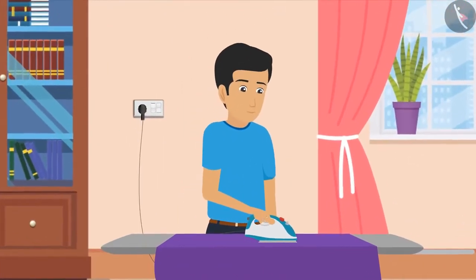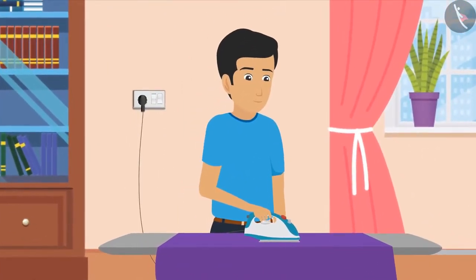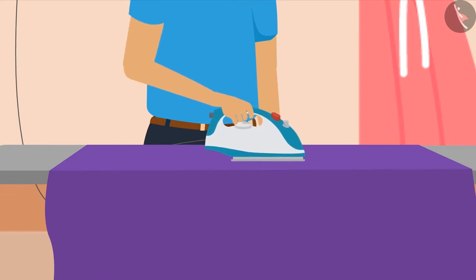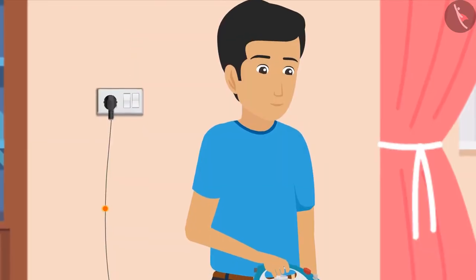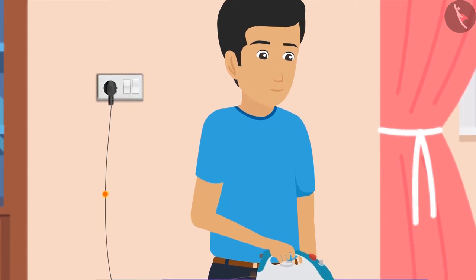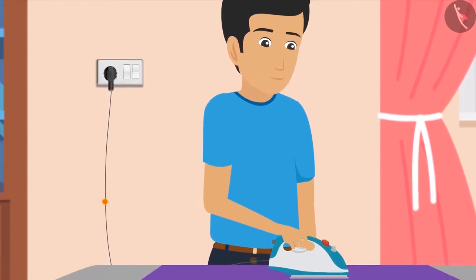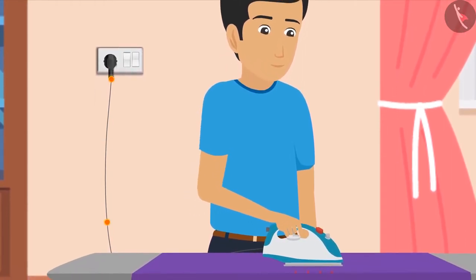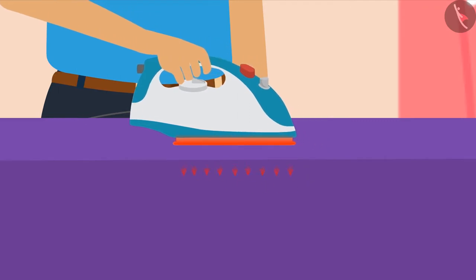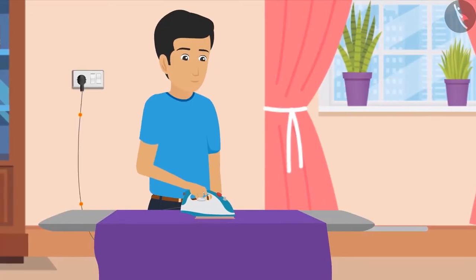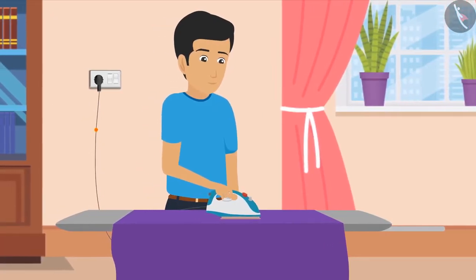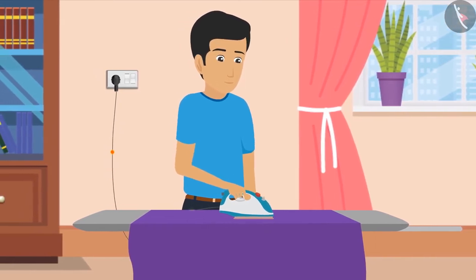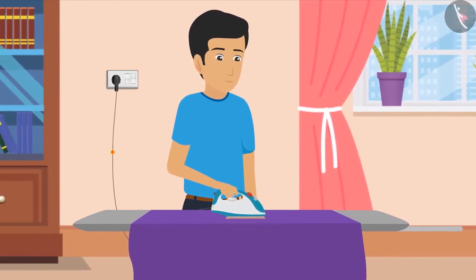If we try to understand this from the example of iron, then we will know that there is a coil in the iron which has resistance. Due to the voltage change, the electric current in this coil increases and decreases, due to which heat also increases and decreases. Also, the longer the iron is on, the more it will emit heat. Besides heating effect, power also plays an important role in electricity. We'll learn about this in our next video.